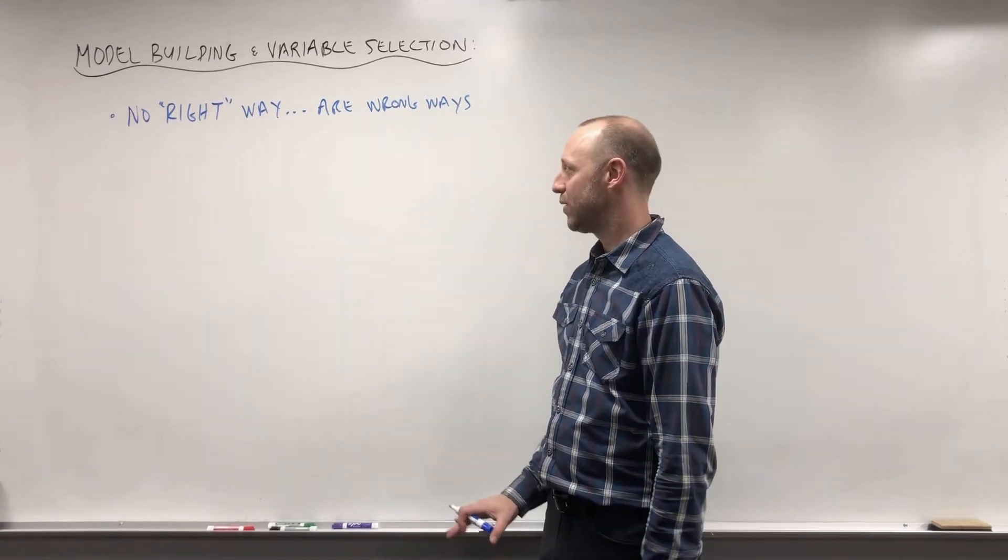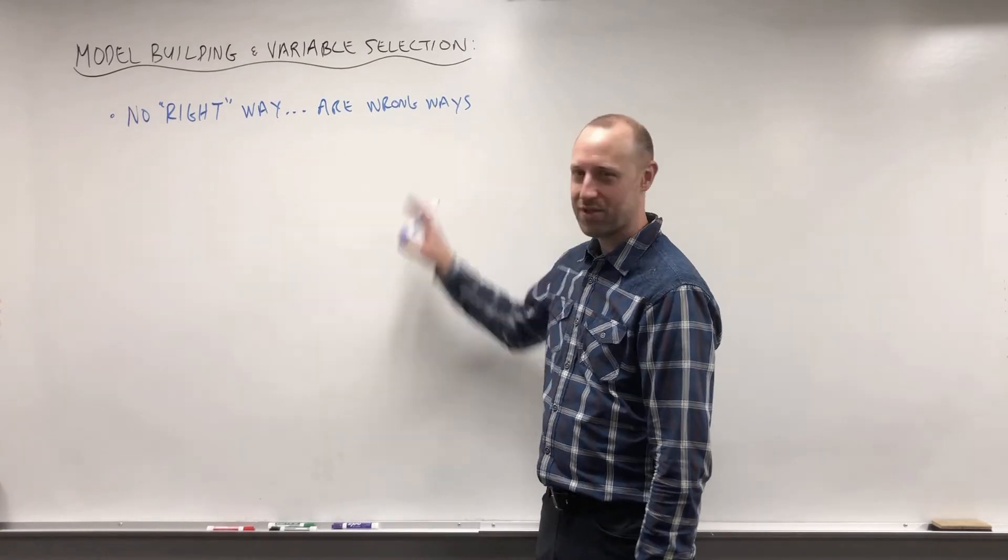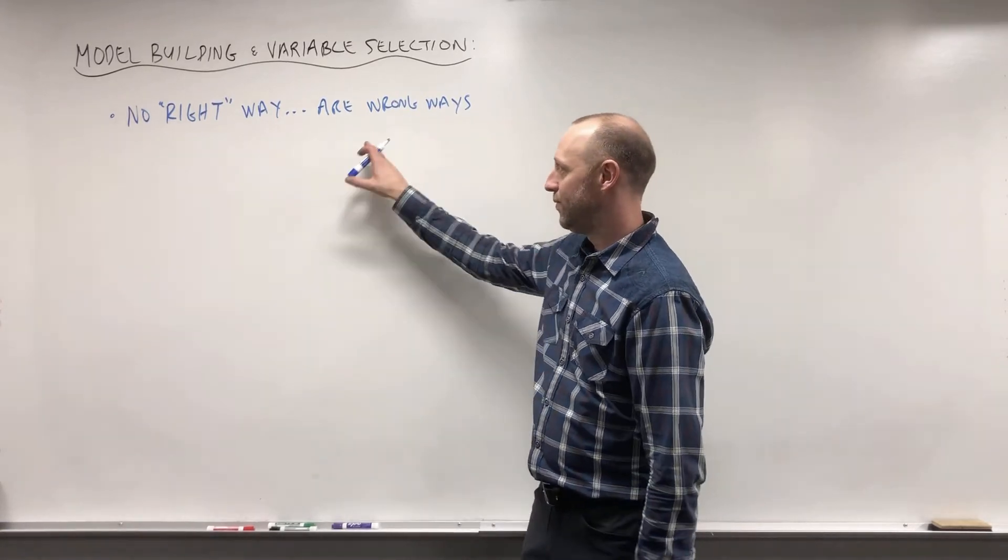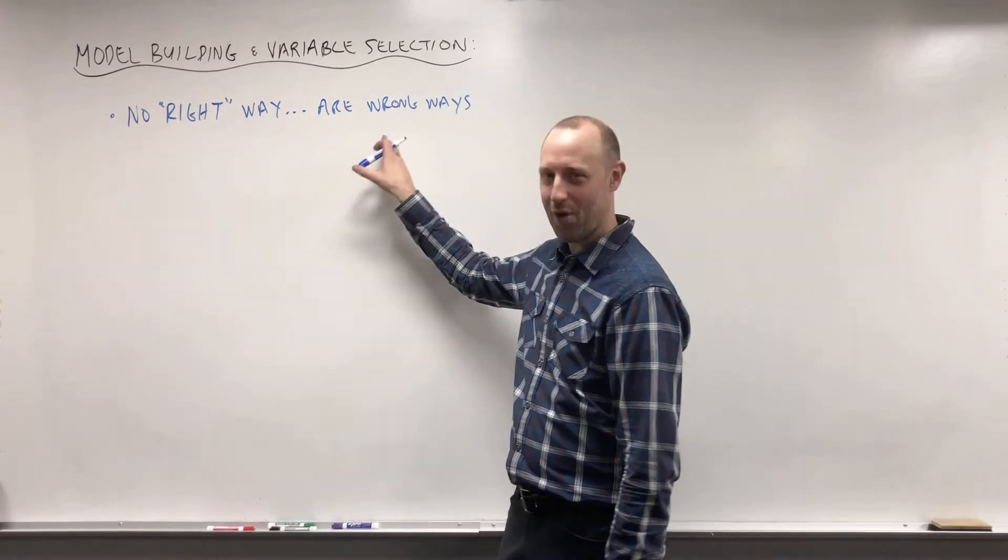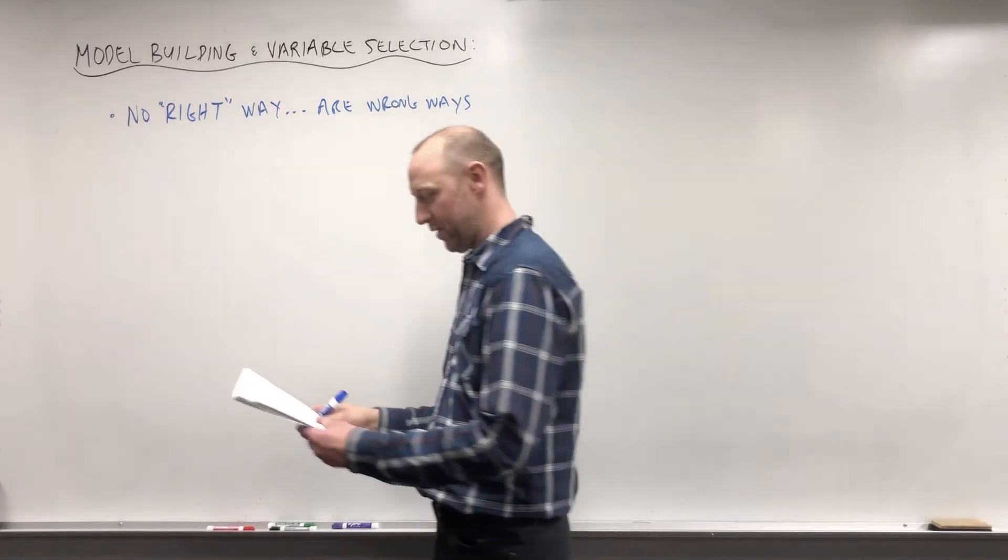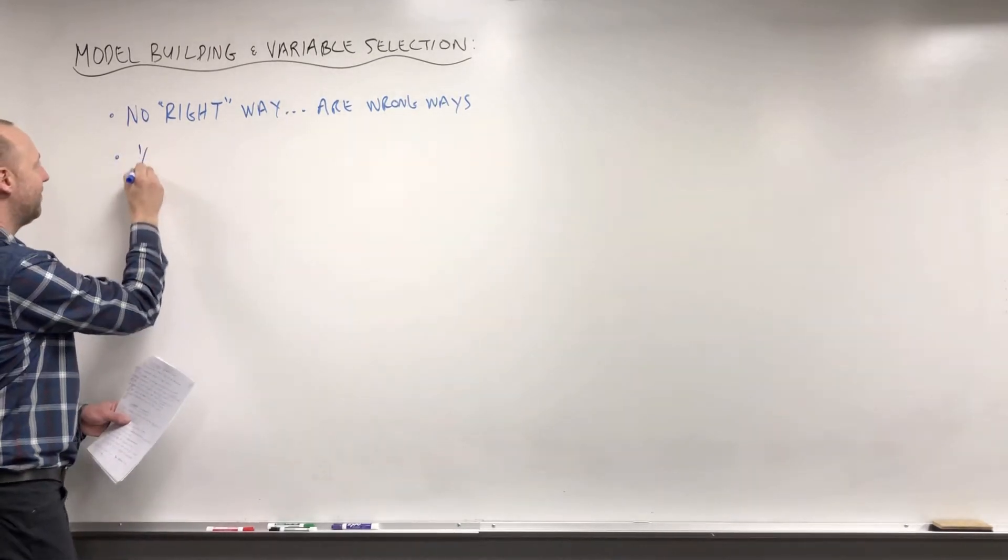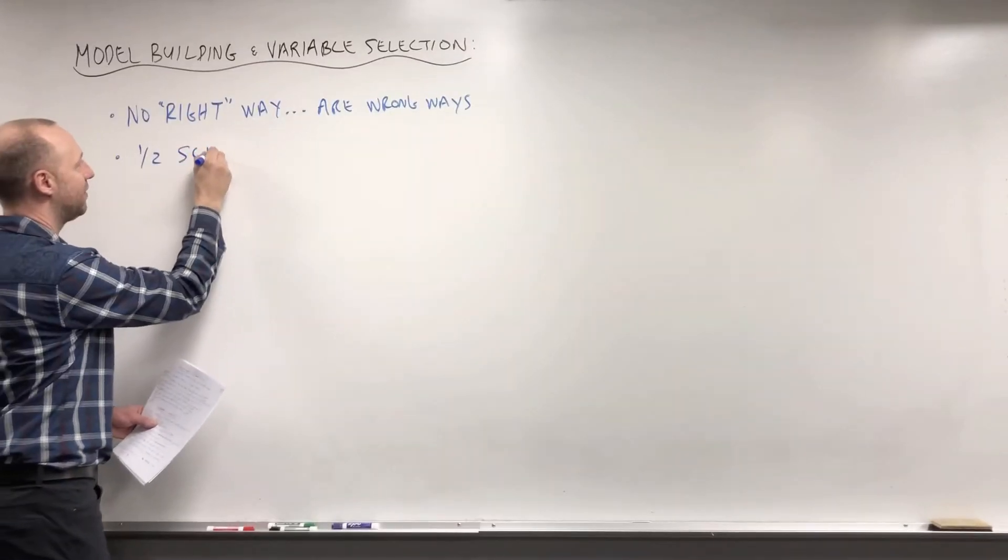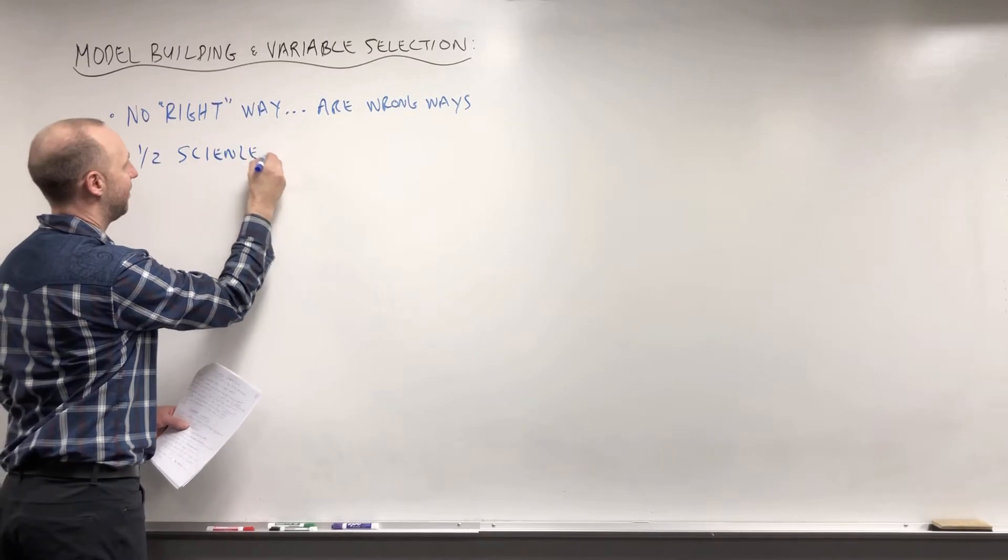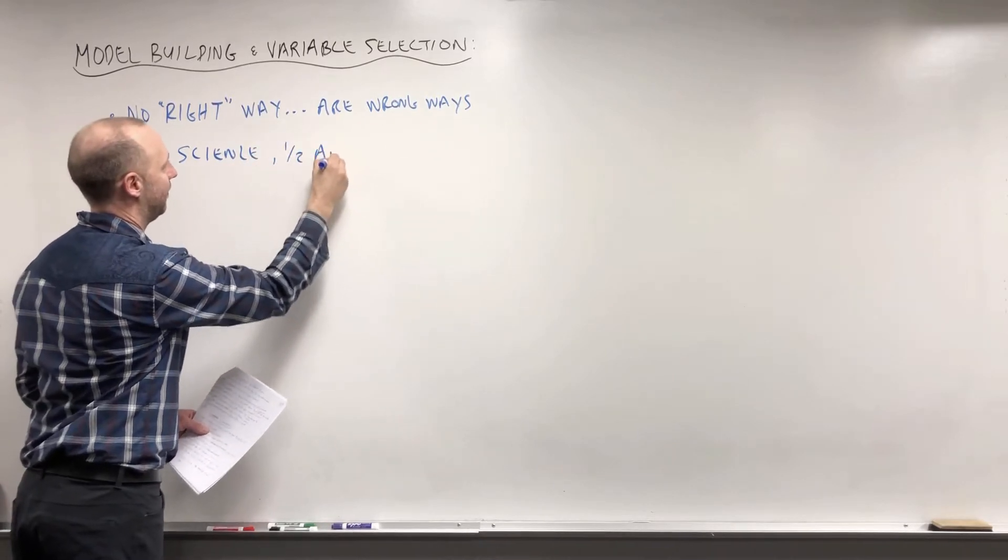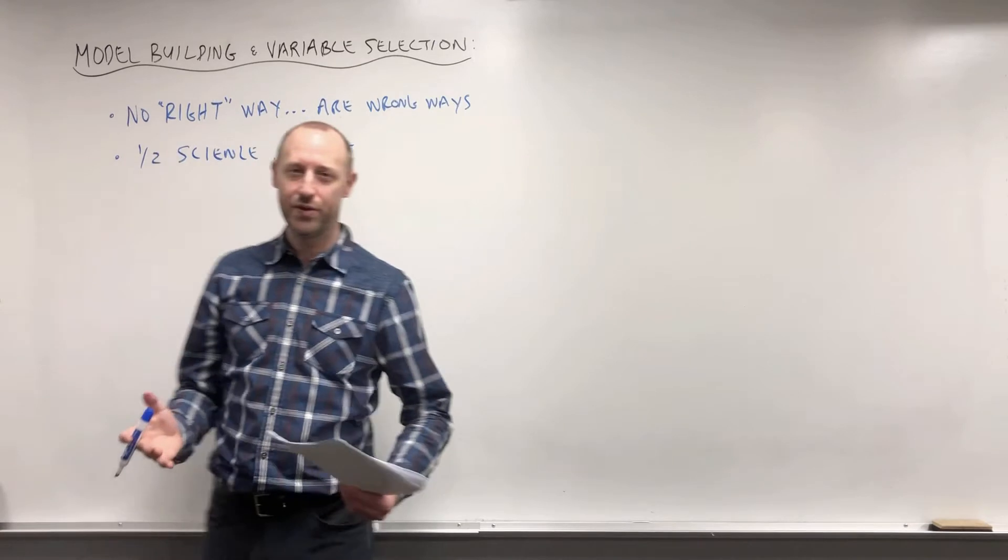So again, I just do want to stress this: there's not one right way of doing it. There definitely are wrong things to do, but there's not one correct way. The approach I like to think of it as being half science, half art. There's a combination of using statistics and numerical approaches, and there's a combination of using thinking and creativity as well.